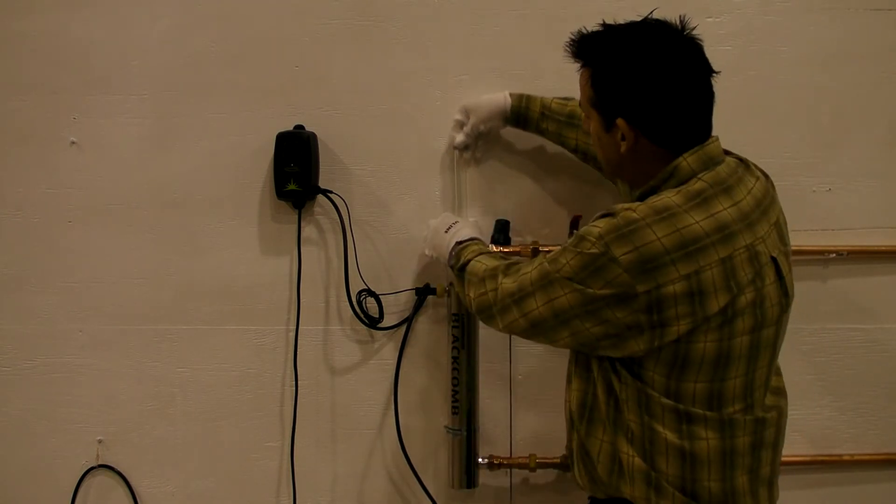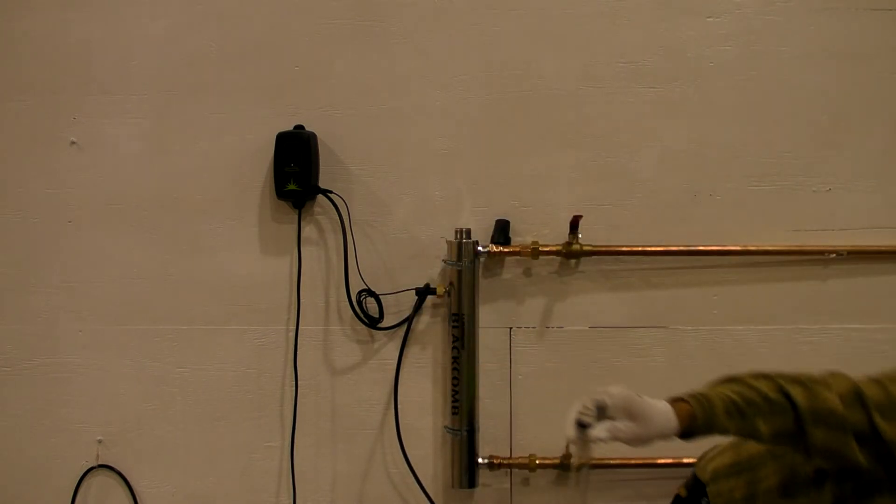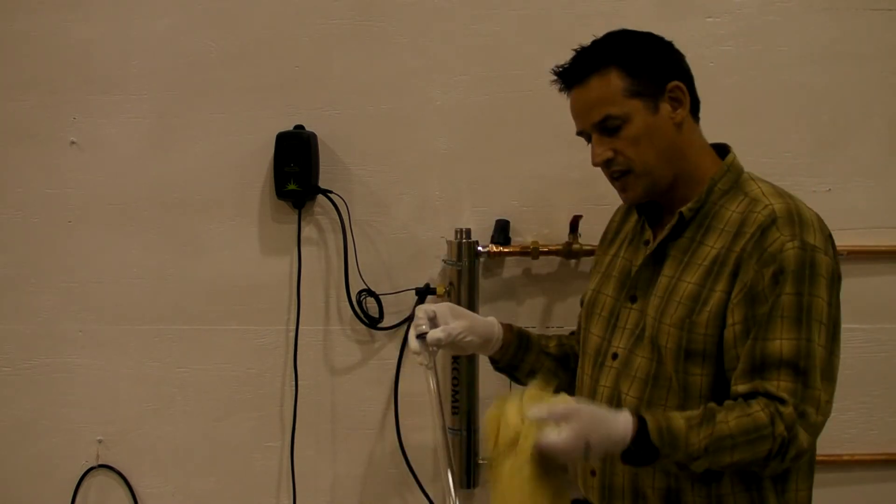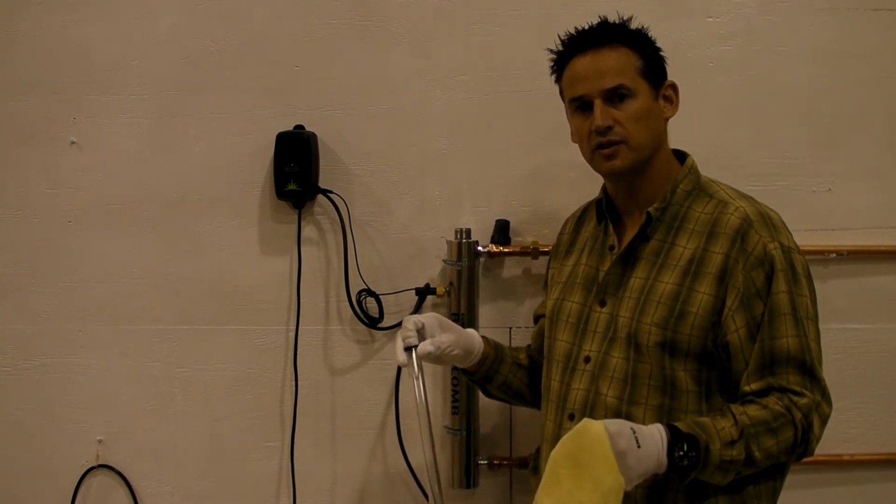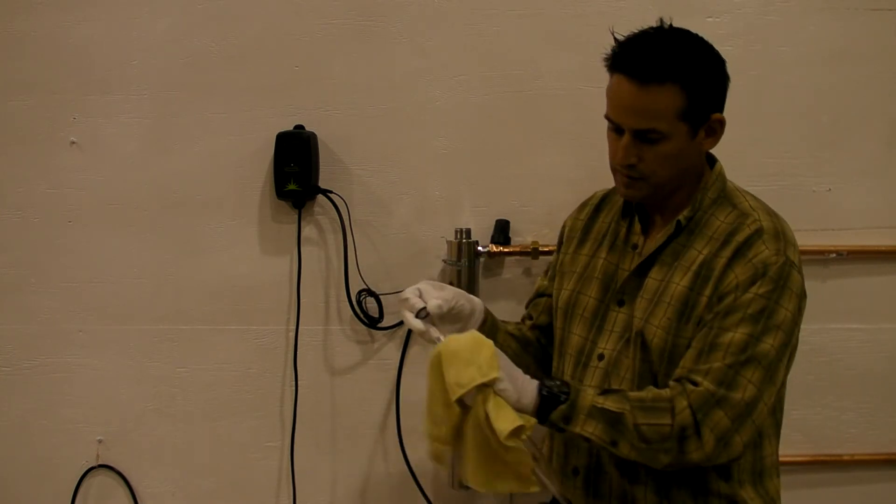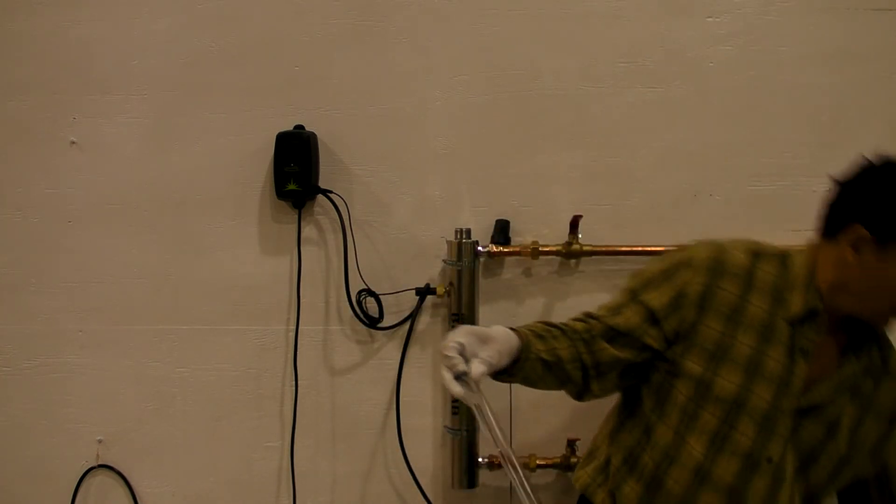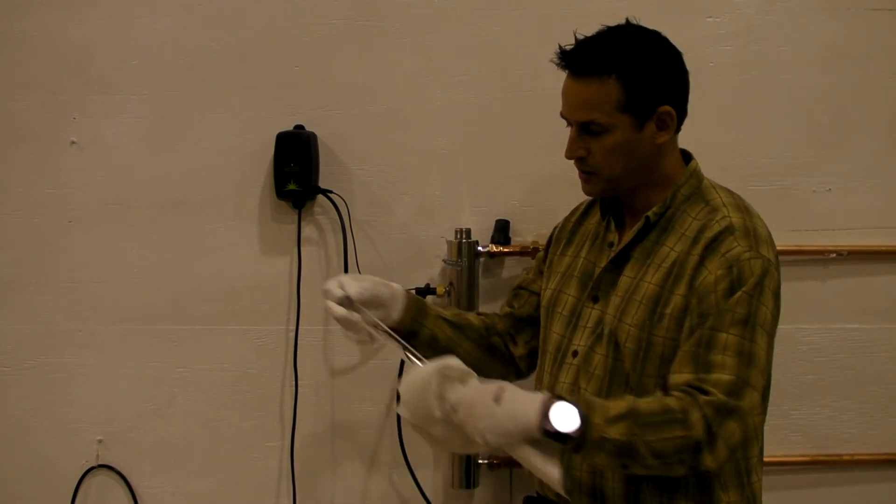Carefully grab the quartz sleeve, remove it from the system. If it's stained, take a cloth that's soaked with a mild acidic solution such as CLR or LimeAway. Carefully wipe down the exterior of the sleeve. Grab a separate dry cloth, make sure the sleeve is wiped clean.